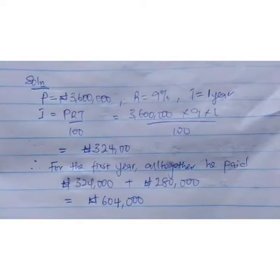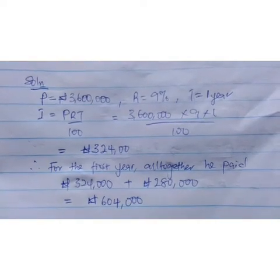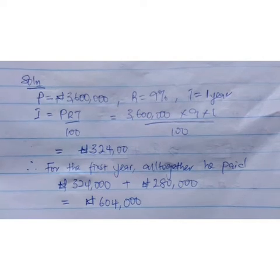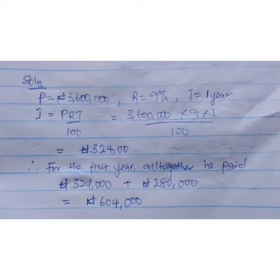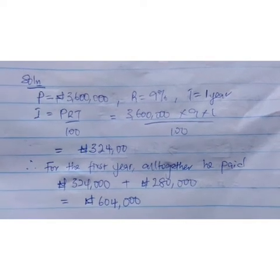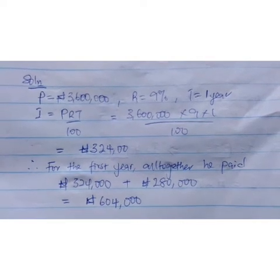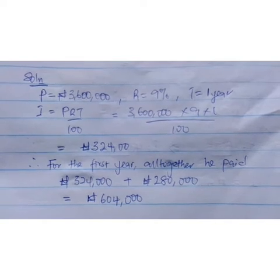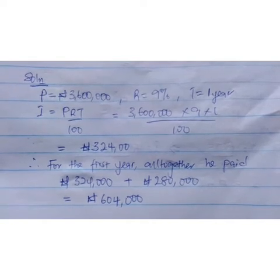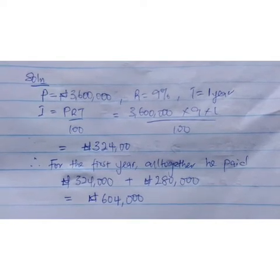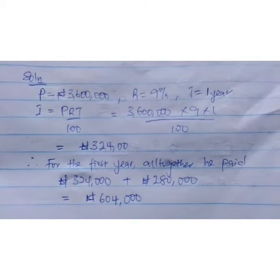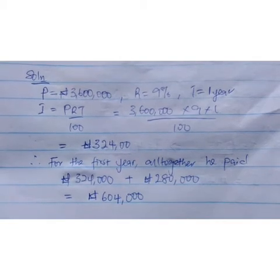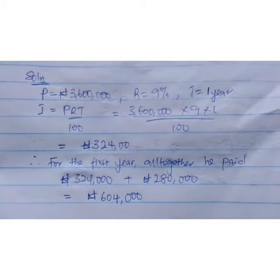Solution. In this case, our P, which is our principal, is 3,600,000 naira. Our rate is 9%, and the time is 1 year. Using I equals PRT over 100, we have 3,600,000 naira times 9 times 1 over 100, leaving us with 324,000 naira.